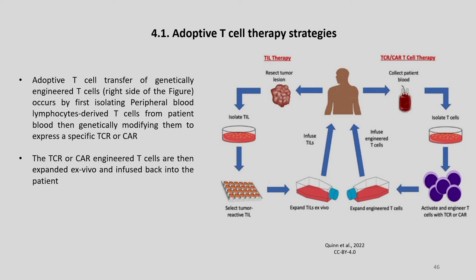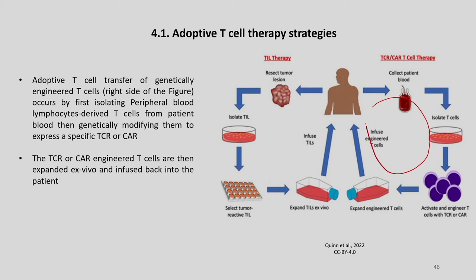Adoptive cell transfer of genetically engineered T cells, on the right side, occurs by first isolating peripheral blood lymphocyte-derived T cells from the patient's blood, then genetically modifying them to express a specific TCR or CAR. The TCR or CAR-engineered T cells are then expanded ex vivo and infused back into the patient, making a full journey from the patient back to the patient.